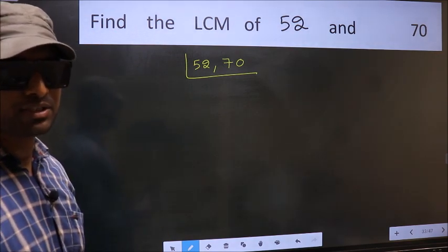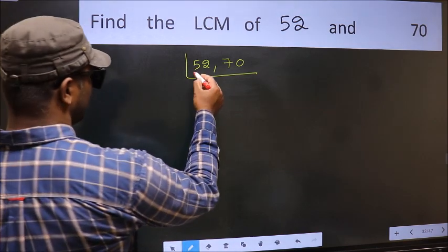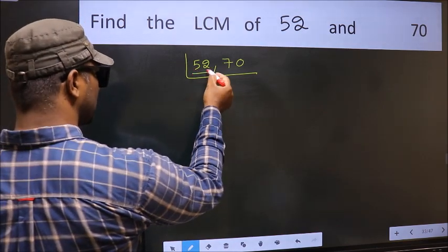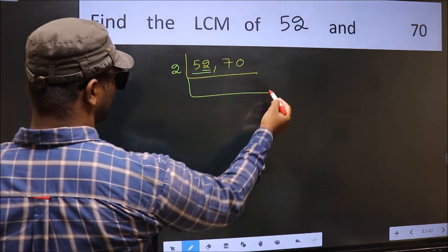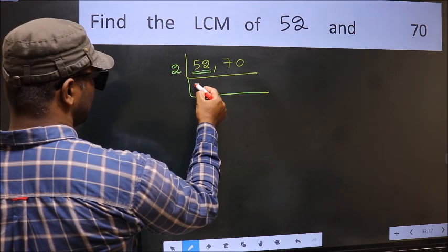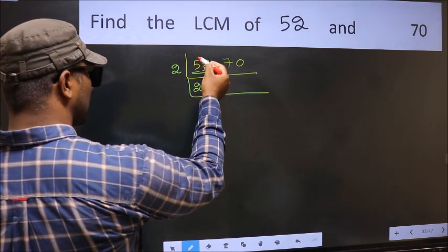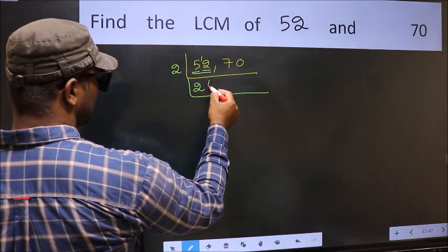Now you should focus on the first number, which is 52 here. For this number, last digit 2, even, so take 2. First number 5. A number close to 5 in 2 table is 2×2=4. 5 minus 4 equals 1, 1 carried forward, 12. When do we get 12 in 2 table? 2×6=12.